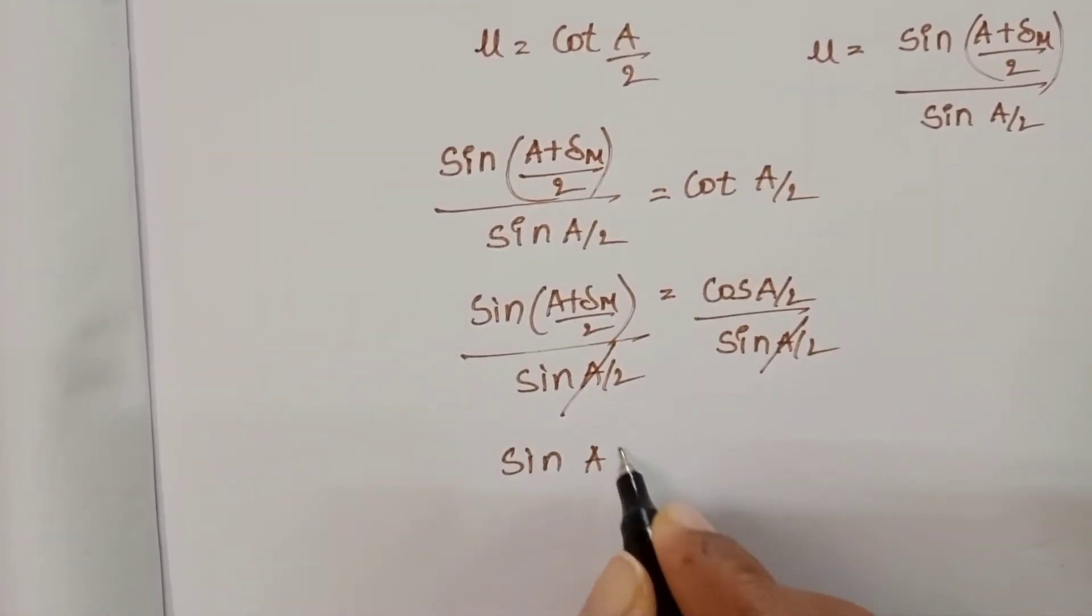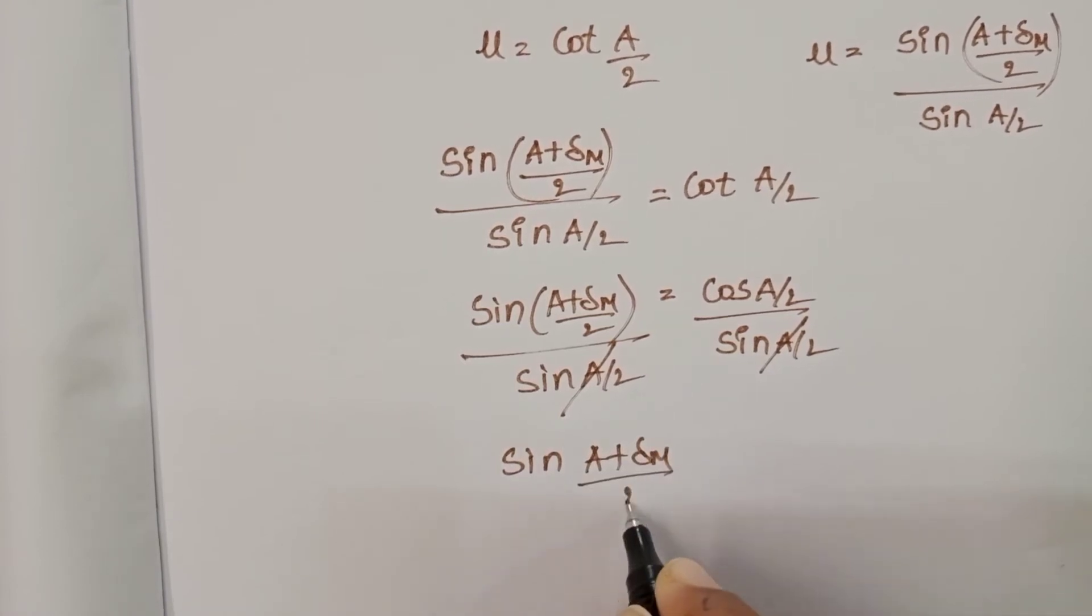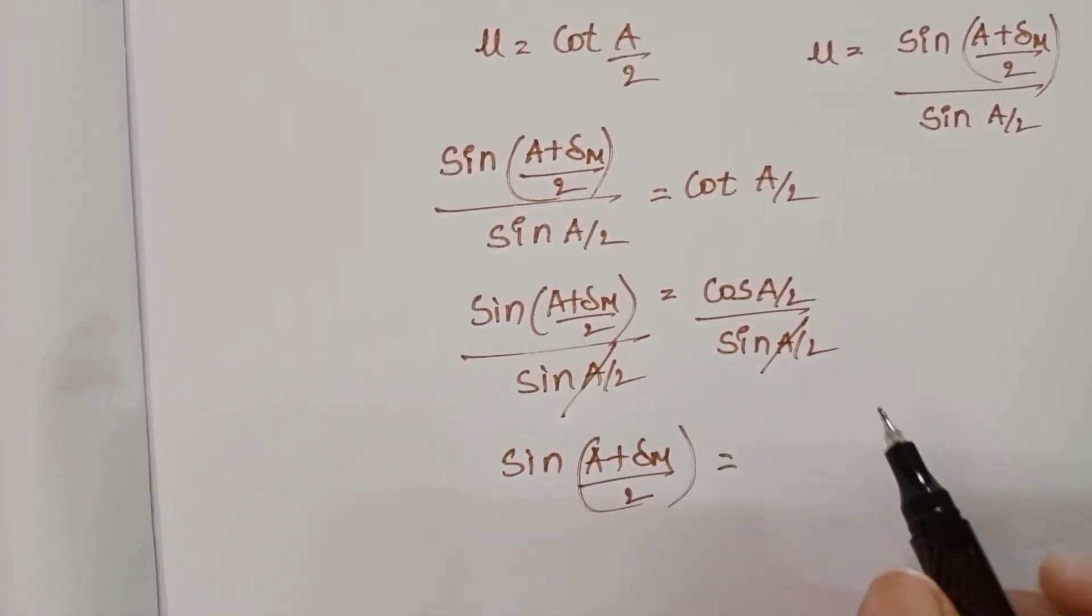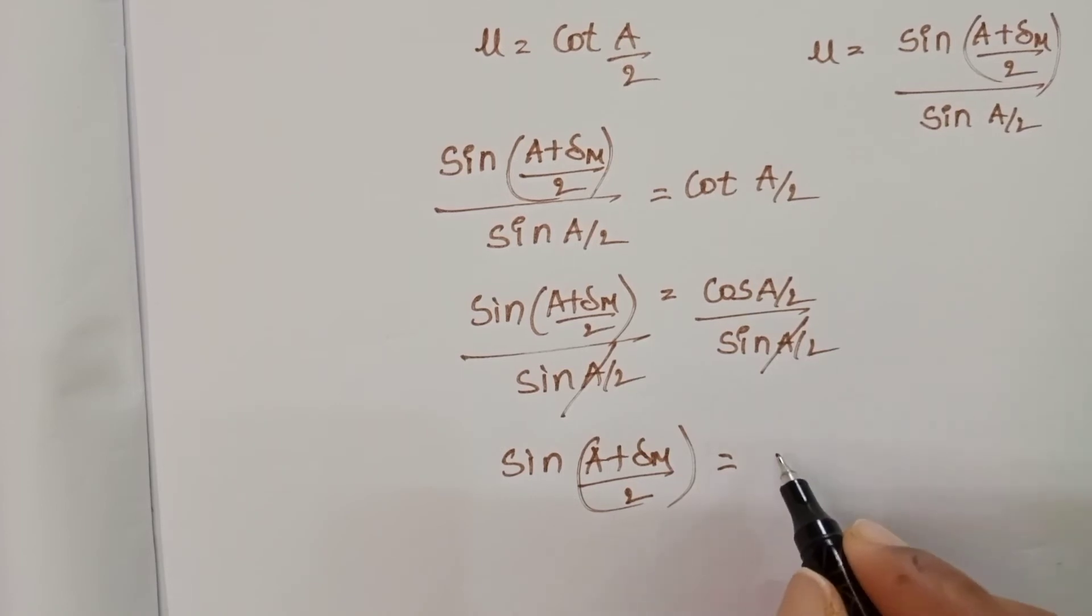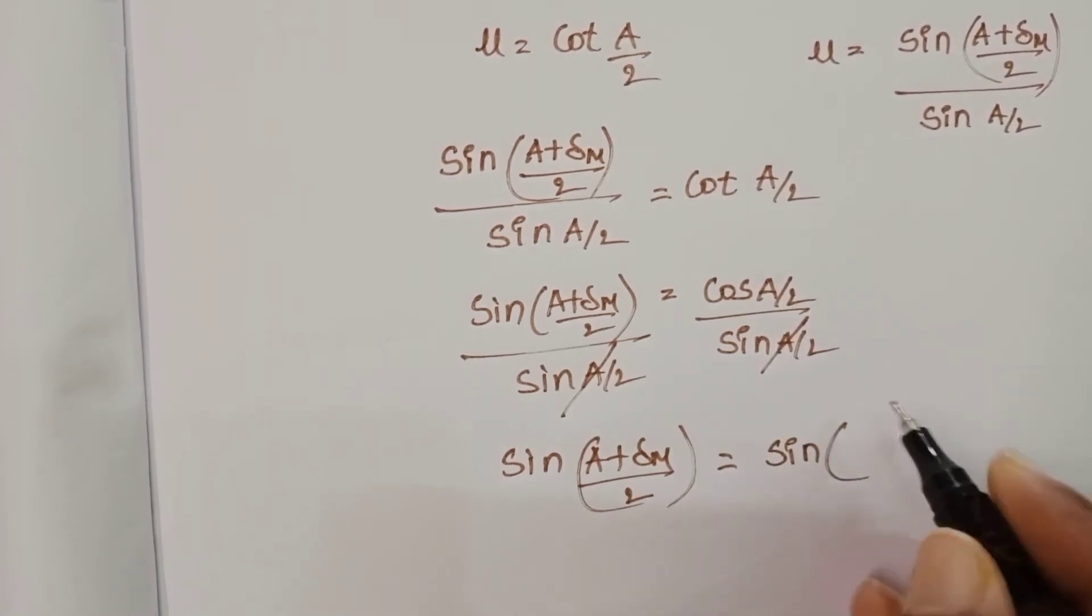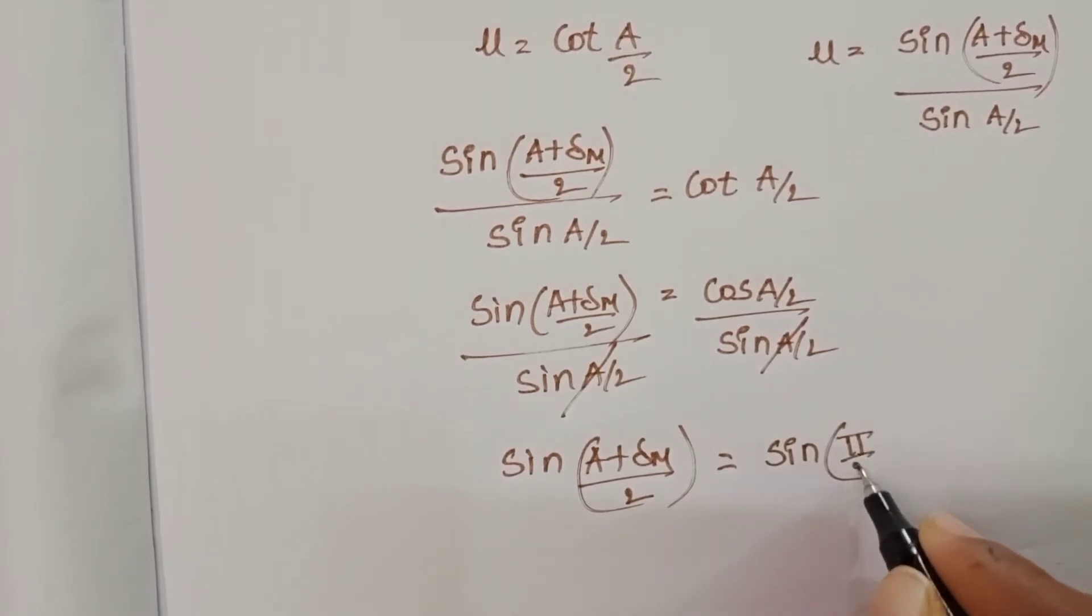Sin((A + δm)/2) equals cos A/2, which we can write in the form of sin(π/2 - A/2). Sin(90 - θ) equals cos θ.